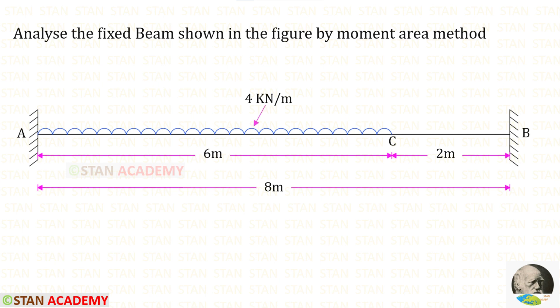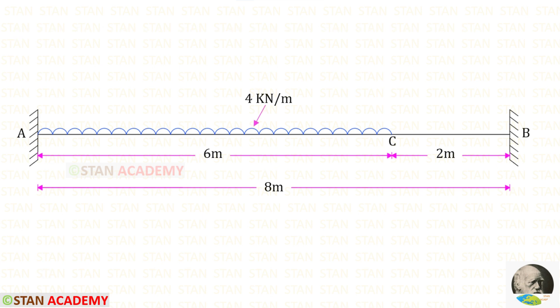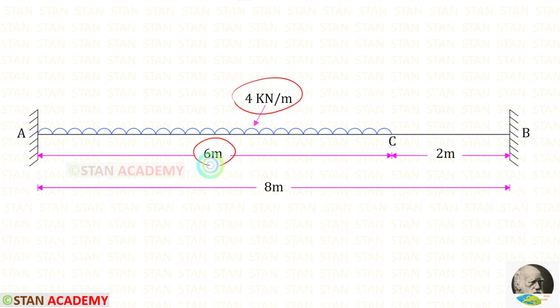Hello everyone. Today we are going to analyze a fixed beam using the moment area method. The length of the beam is given as 8 meters. In this beam we have a uniformly distributed load of 4 kilo newton per meter acting over a distance of 6 meters from the left support.